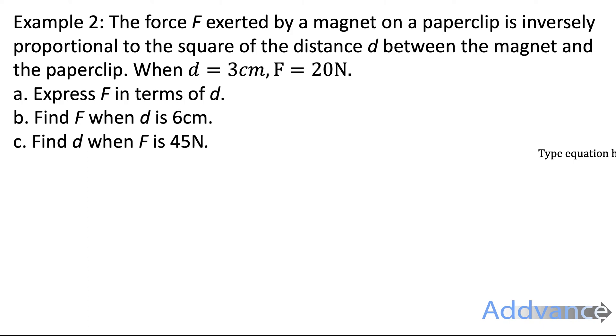Let's look at another one. Example 2. The force F exerted by a magnet on a paper clip is inversely proportional to the square of the distance d between the magnet and the paper clip. When the distance is 3cm, F is 20N.